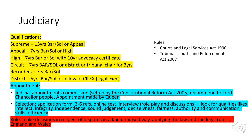For the judiciary, qualifications include: Supreme Court — 15 years as barrister or solicitor, or appeal experience. Court of Appeal — 7 years as barrister, solicitor, or high court experience. High Court — 7 years as barrister or solicitor with a 10-year advocacy certificate. Circuit judge — 7 years as barrister or solicitor, or district or tribunal chair for three years. Recorders — 7 years as barrister or solicitor. District judge — 5 years as barrister or solicitor, or fellow of CILEx (a legal executive).